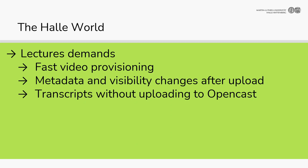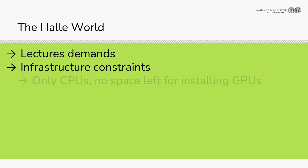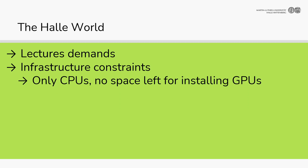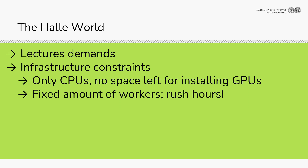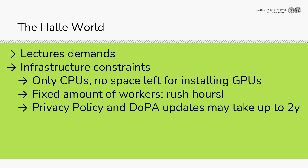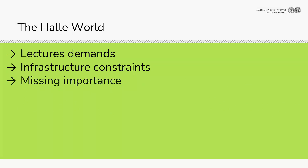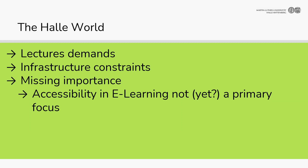They also want to have transcripts without actually having to upload to OpenCast. There are also infrastructure constraints — we only have CPUs and no HPC for education, only for research. We have a fixed amount of workers and we have rush hours. We also have to consider privacy policies, and updating such a thing may take up to two years. Accessibility is not the primary concern yet at our university — we can do a lot, but nobody says it's a priority.